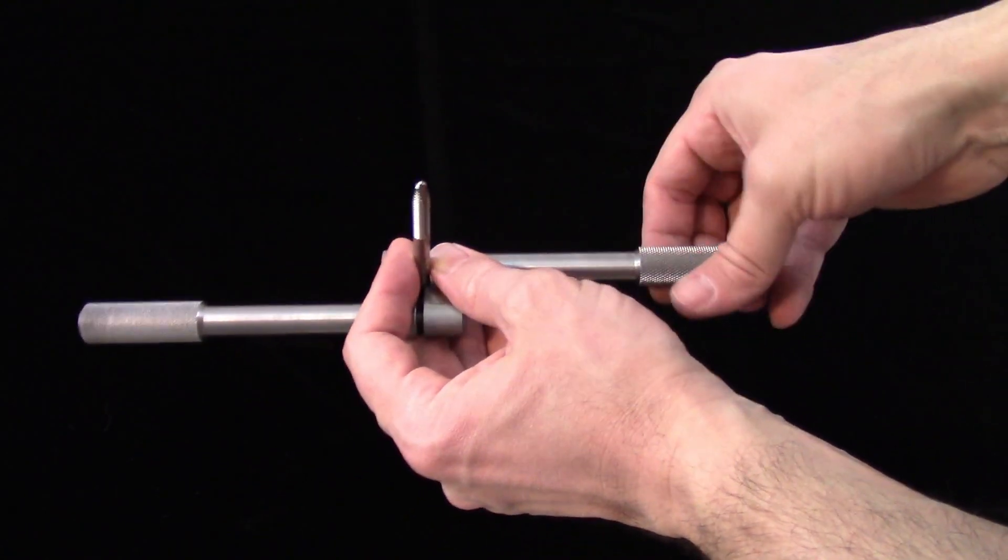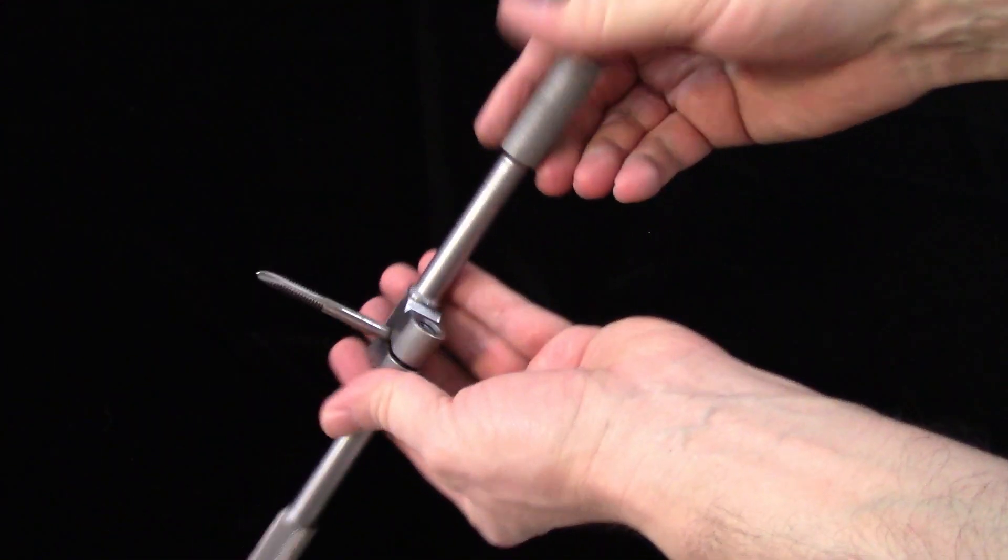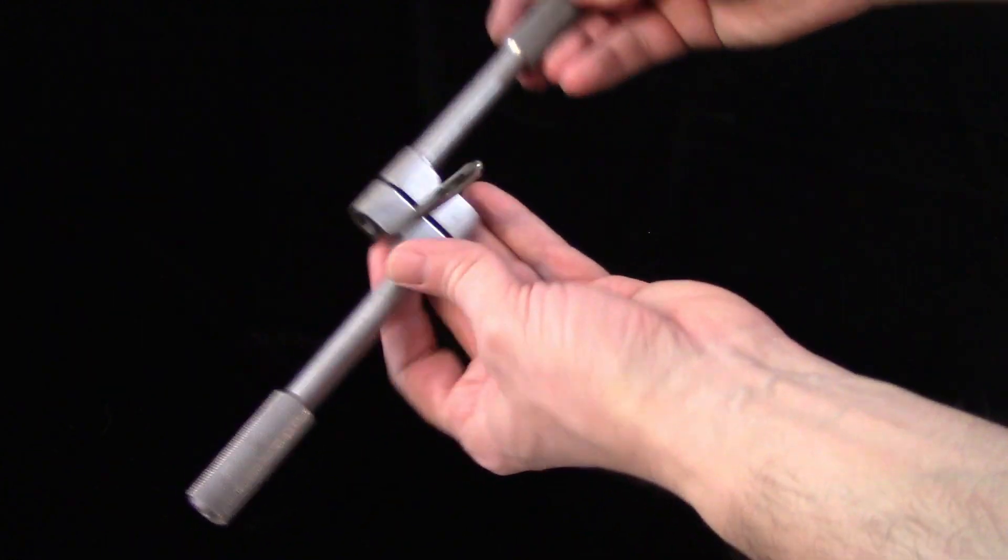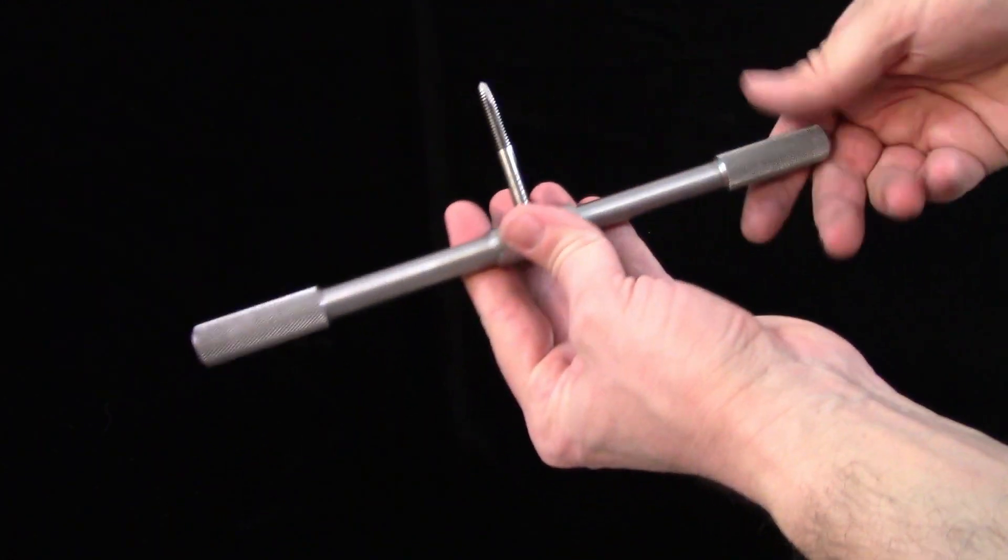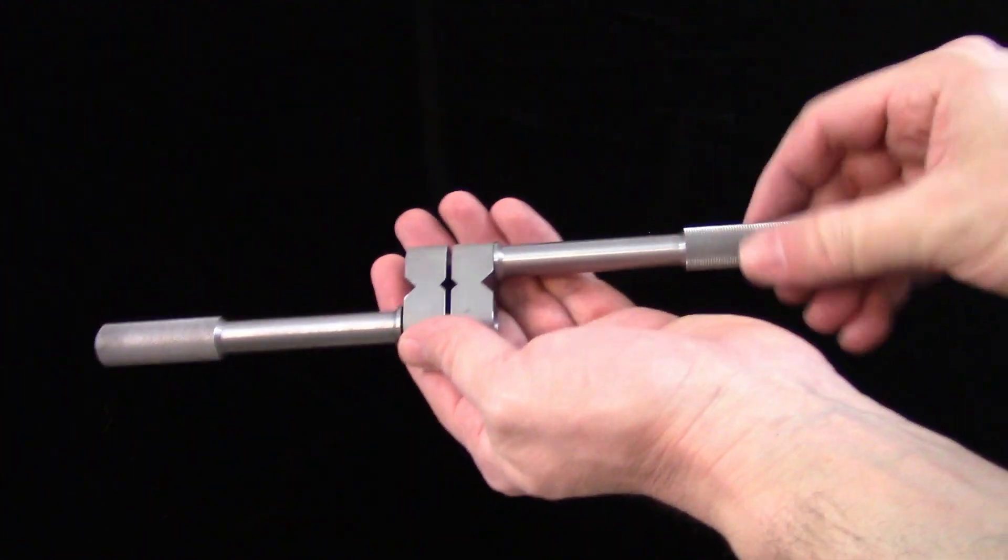By far, my most commonly used tap is a 1/4-20, which is right around the same size as an M6. I based all of the dimensions for this tap wrench off of a 1/4-20 tap and a 1/2-inch tap to make sure that those two sizes fit.